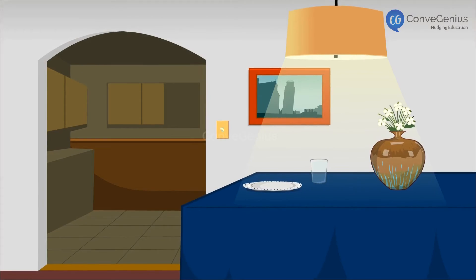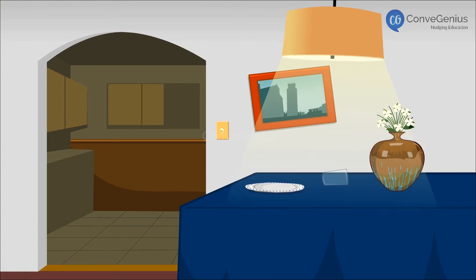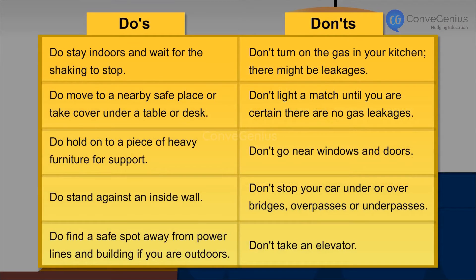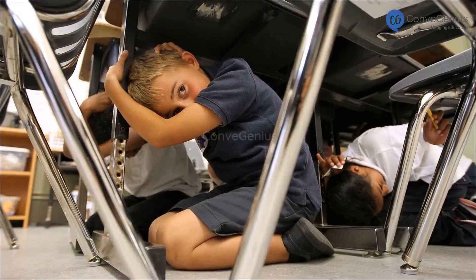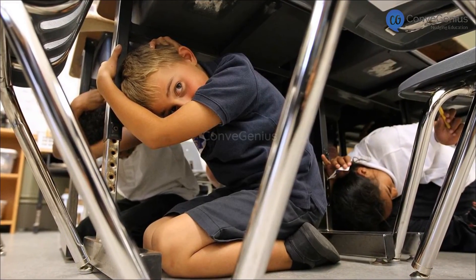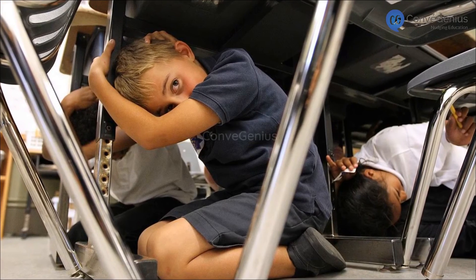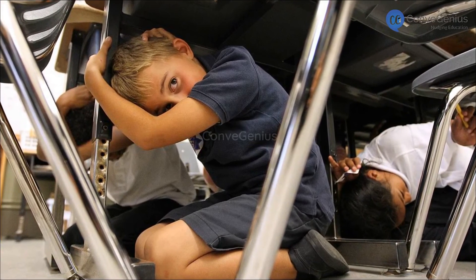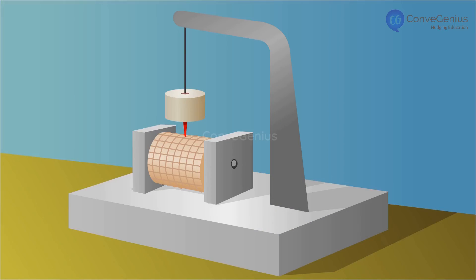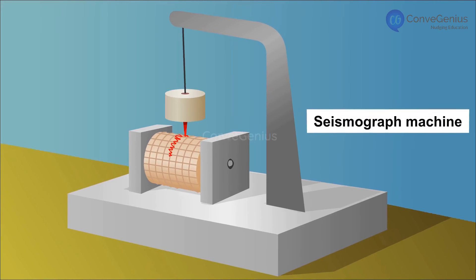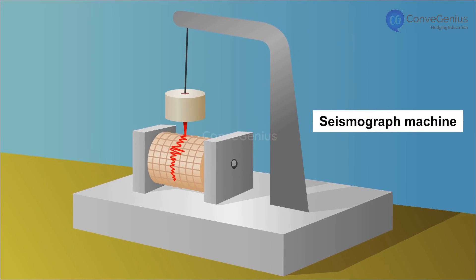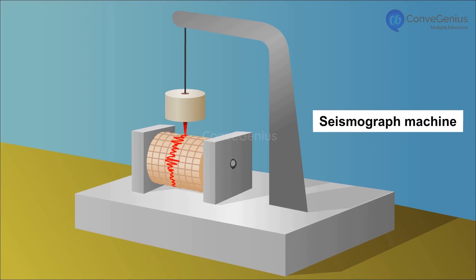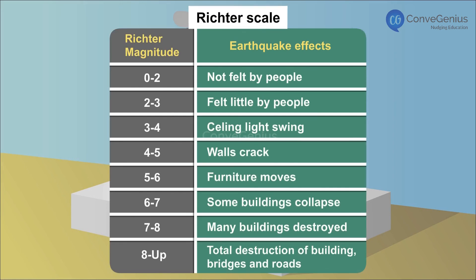Precautions need to be taken when earthquakes occur. There is a list of do's and don'ts to be followed for safety. Run out of a building quickly or hide under a chair to save yourself from getting hurt. You can confirm an earthquake using a seismograph machine, and its magnitude can be measured using a Richter scale.